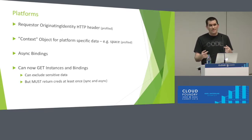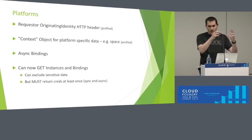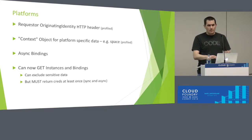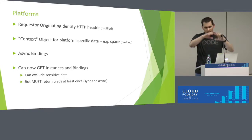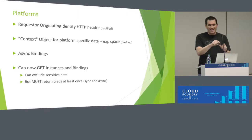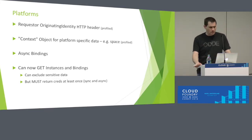We also added a context object. We moved the platform-specific properties — org and space for Cloud Foundry, namespace for Kubernetes — into a new well-defined JSON object called 'context.' That way, when another platform comes along, it puts its information in one spot rather than sprinkling it throughout the payload. The profile document explicitly says for Cloud Foundry the context has to have org and space for certain operations, and for Kubernetes it has to have namespace.